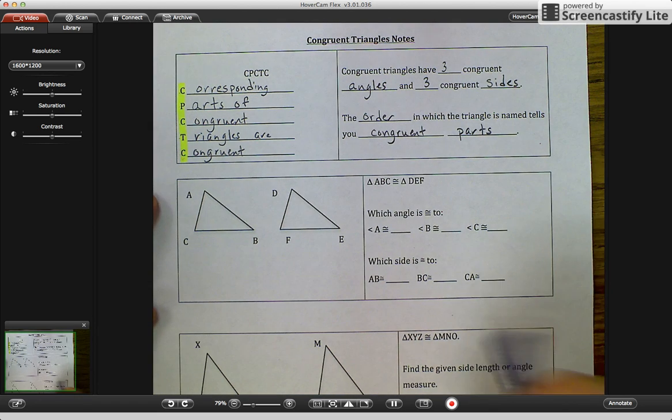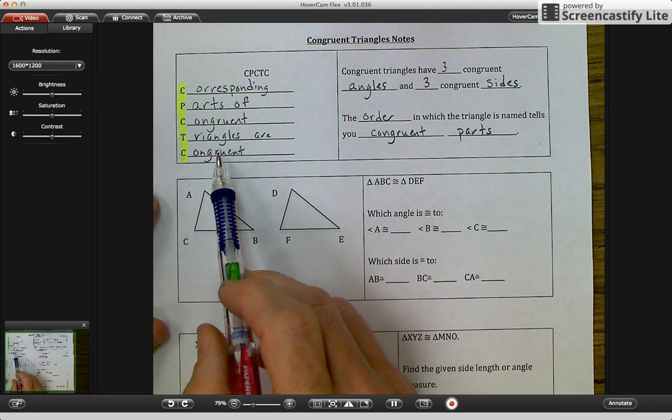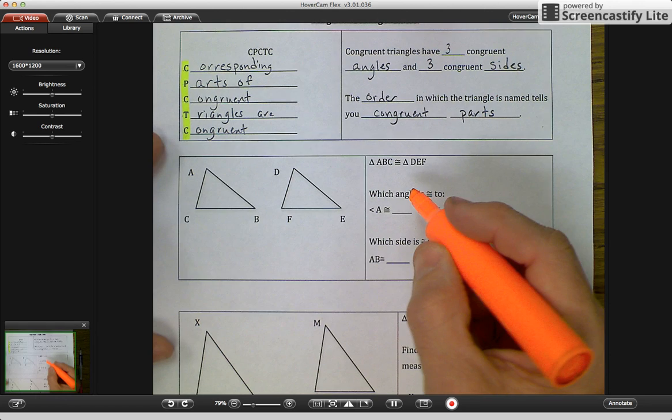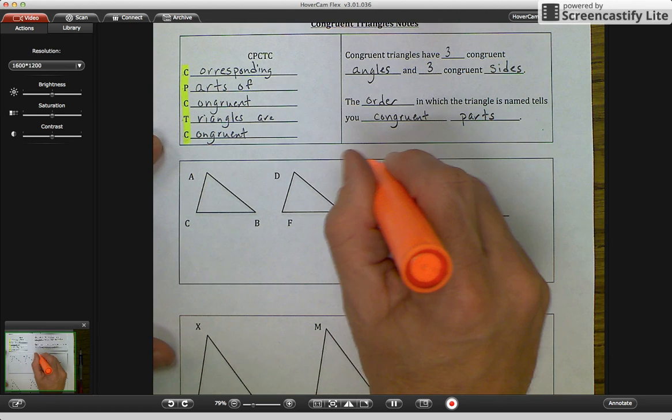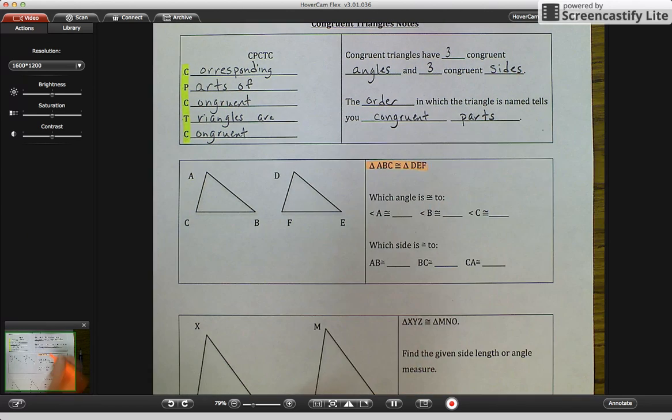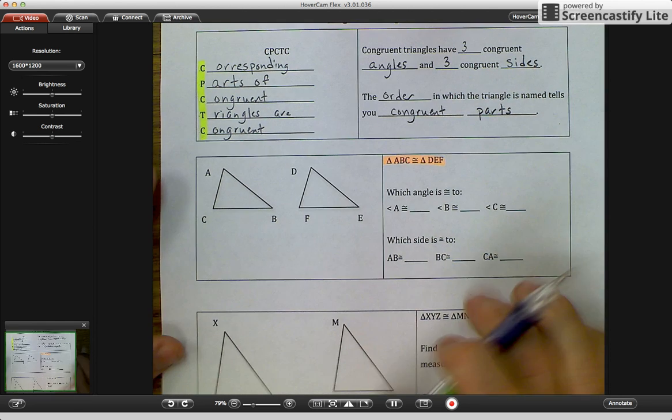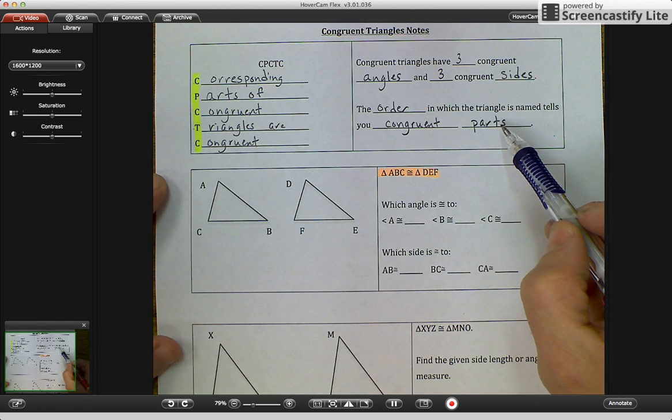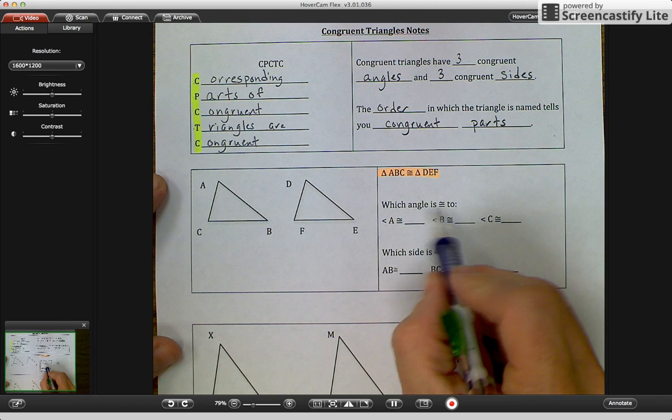All right. Let's move down to the second and we're going to use the CPCTC. On the second one, let's highlight this one. It says triangle ABC is congruent to triangle DEF. And we set up here that the order in which the triangle is named tells you the congruent parts.